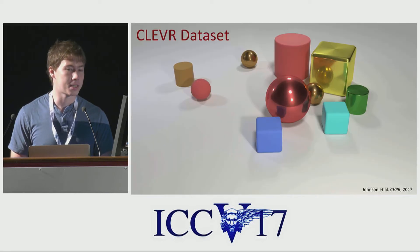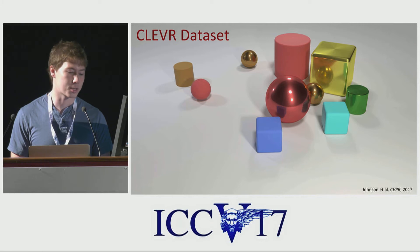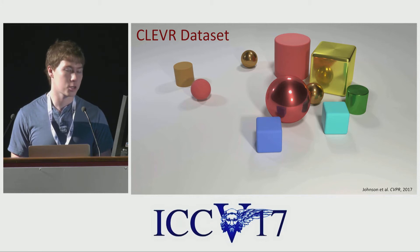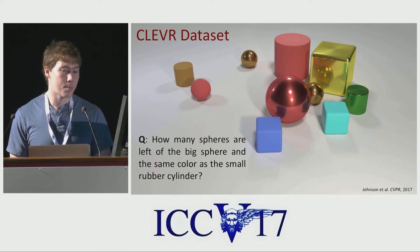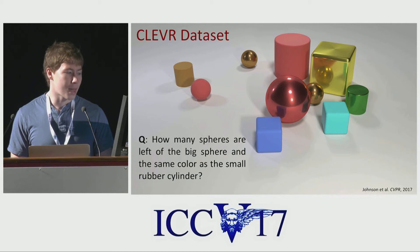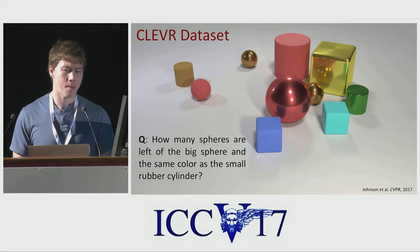To this end, at CVPR this year, we introduced the CLEVR dataset to study compositional visual reasoning in computer vision systems. The CLEVR dataset consists of artificially rendered images together with synthetic templated questions. These questions can be pretty complex. This one is: how many spheres are left of the big sphere in the same color as the small rubber cylinder? I don't expect you to answer this right away, so let's step through the solution together.